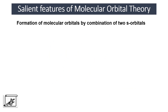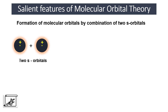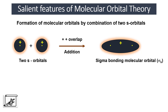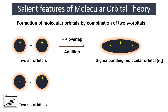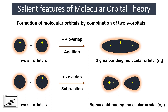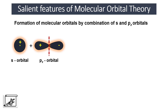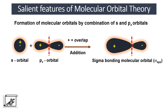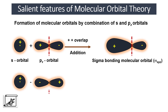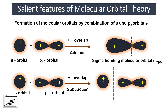Now let's see how two s orbitals combine to form molecular orbitals. When two s orbitals combine with positive overlap, it causes shielding of the nuclei and results in a sigma bonding molecular orbital represented by σs. When they combine with subtractive overlap, it results in a sigma antibonding molecular orbital represented by σ*s, with zero electron density between the nuclei and a nodal plane. Similarly, when an s and a pz orbital combine with additive overlap, a bonding MO σ(s,pz) is formed; with subtractive overlap, σ*(s,pz) is formed.